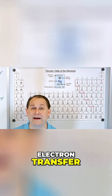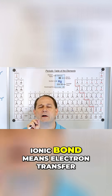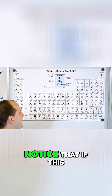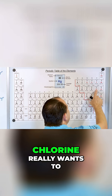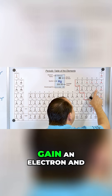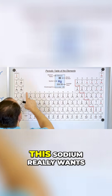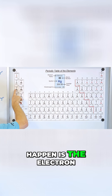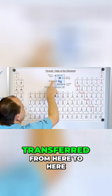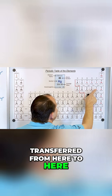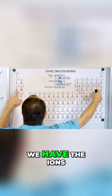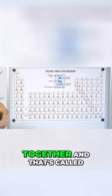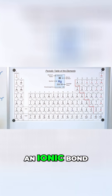Ionic bond means electron transfer. Notice that if this chlorine really wants to gain an electron and this sodium really wants to lose an electron, then what's going to happen is the electron is going to be transferred from the sodium to the chlorine. Once the transfer happens, we have the ions and then they stick together — and that's called an ionic bond.